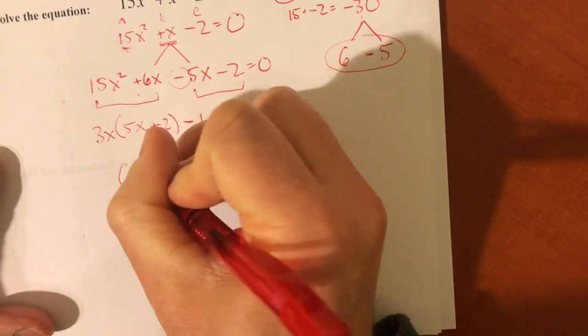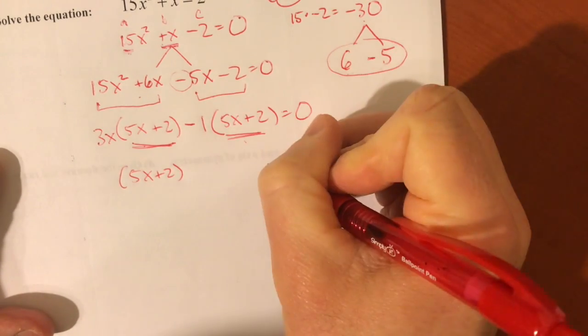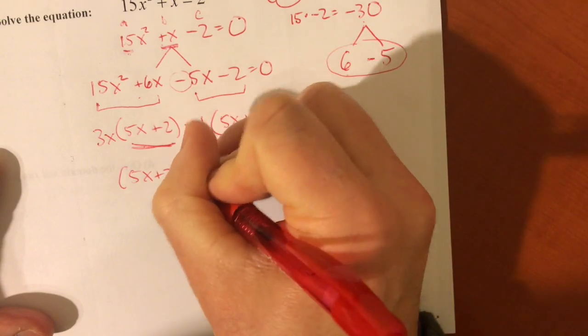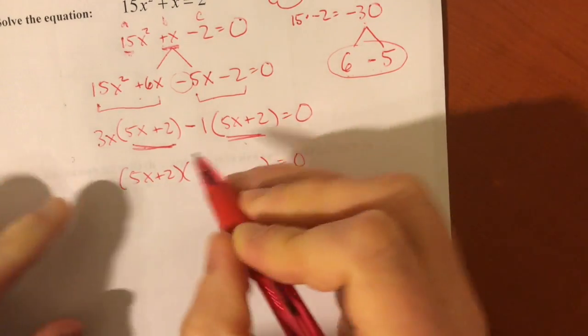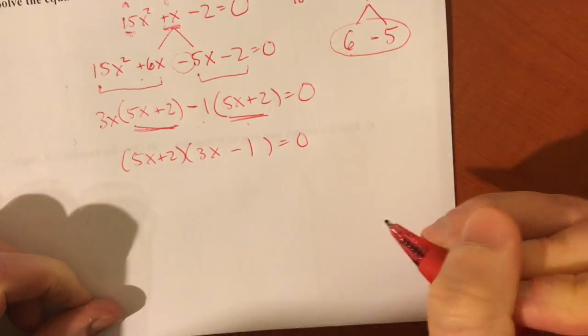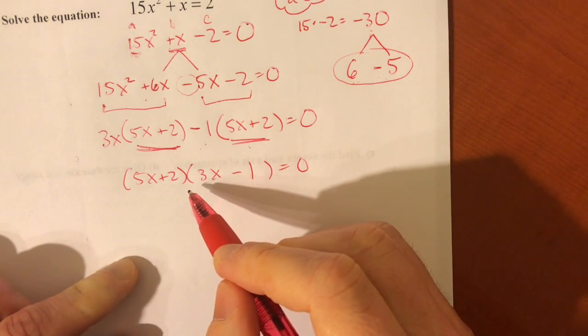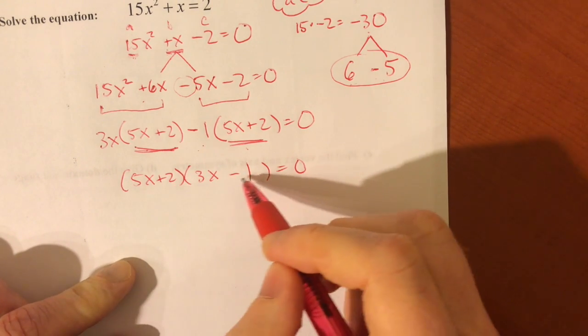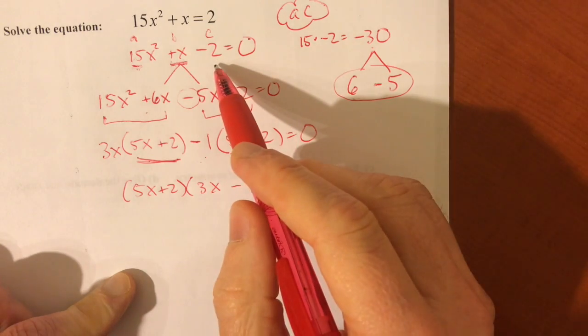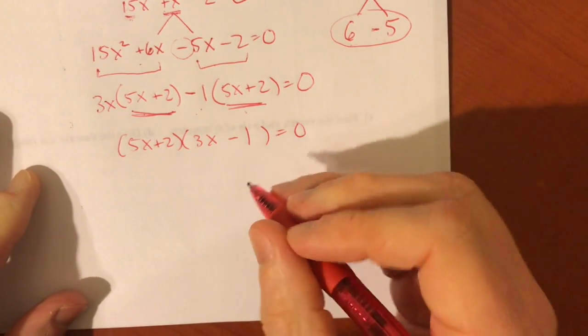So now you can factor out that common factor, 5x plus 2, whether you put it at the back or out in front. And the other factor is made up of these coefficients, 3x minus 1. Hopefully you're getting better with that procedure. Remember, if you want to double check that you factored it correctly, you could just take a minute and foil this out and make sure you get this. It really doesn't take that long.